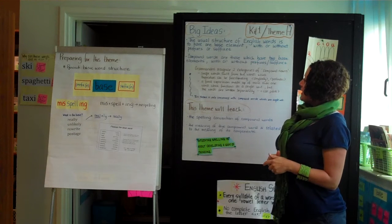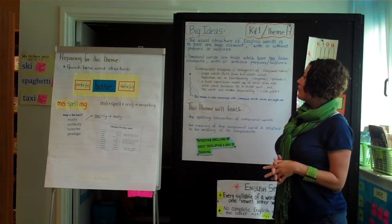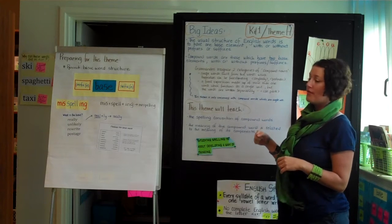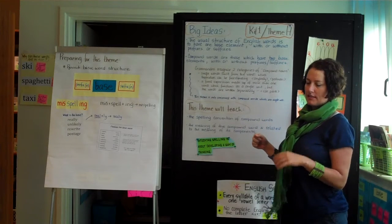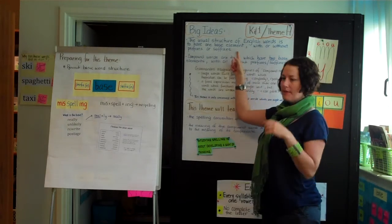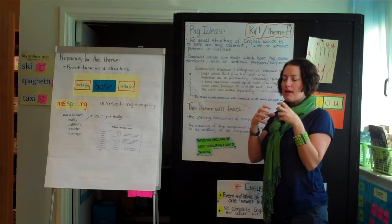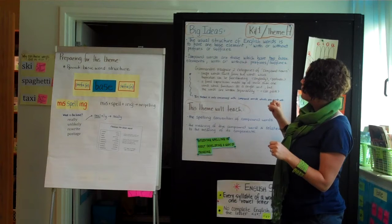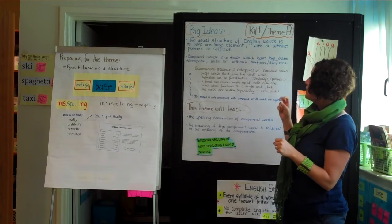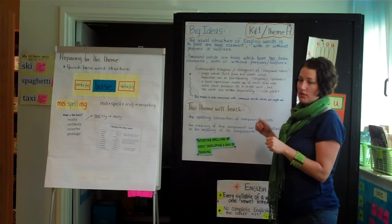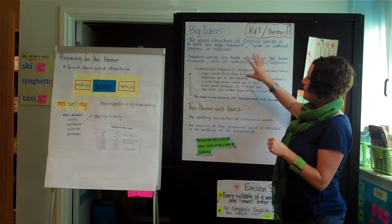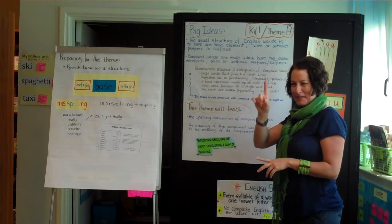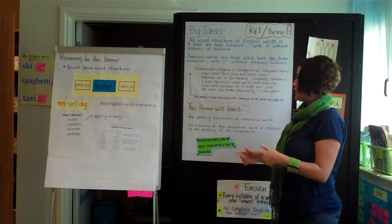The big ideas about this theme: the usual structure of English words is to have one base element, with or without prefixes or suffixes. Throughout the theme, the word 'element' is used — just think of it as the parts and pieces. Compound words are those which have two base elements, with or without prefixes or suffixes. Normal words are one base element, but we do have these things called compounds.